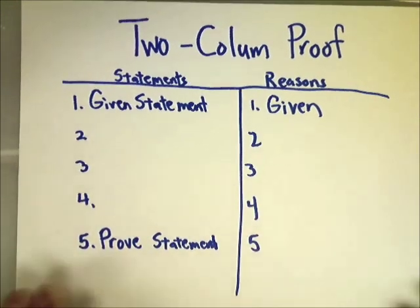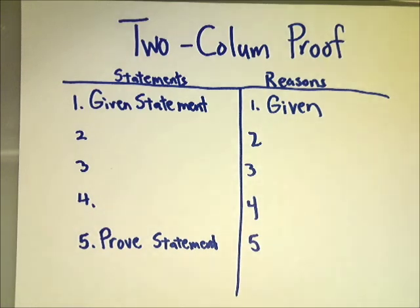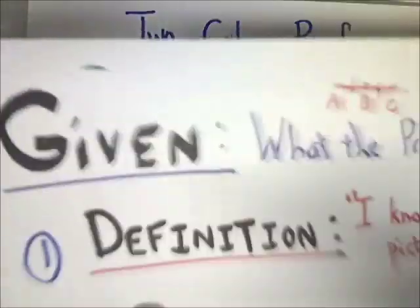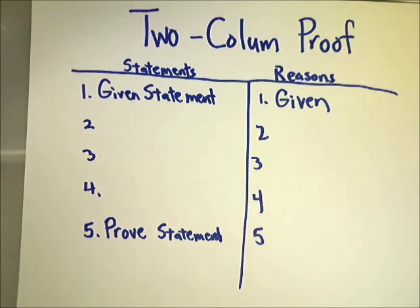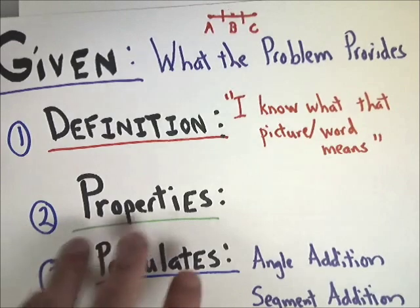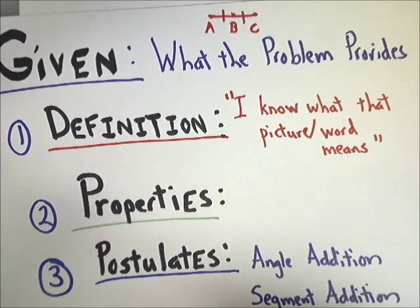Now the two-column proof. The first side is just writing out each step when you solve an equation. You start with a given statement and end with whatever they ask you to prove. On the right side, you justify why you did each step. There are three ways to justify: definitions, properties (addition, subtraction, multiplication, division, reflexive, symmetric, transitive, distributive, substitution - all in equality and some in congruence), and postulates.